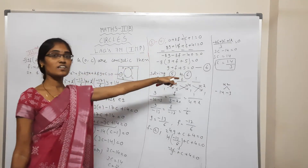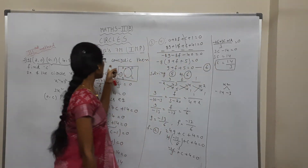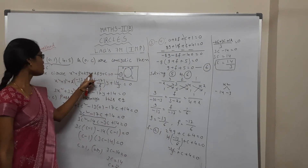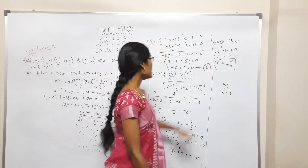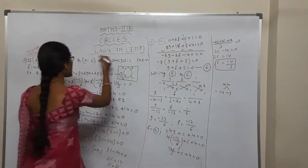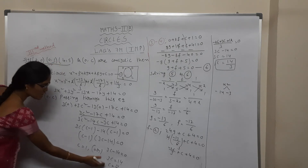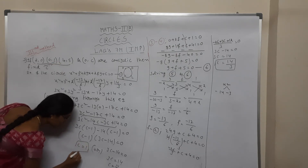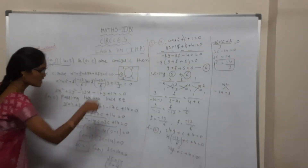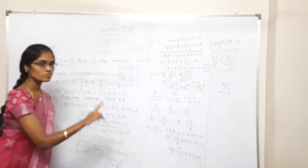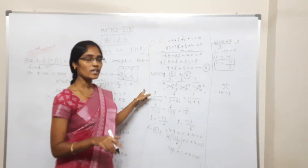The final answer: we found the G, F, and C values from the circle equation and verified by substitution. The final value of C is equal to 1 or C = 14/3. This is a very important model to note for every exam.